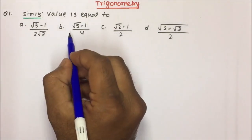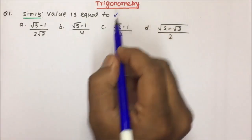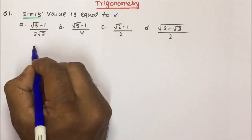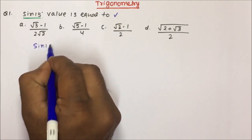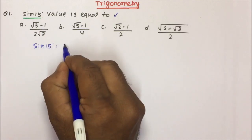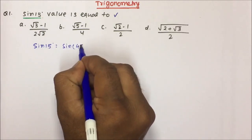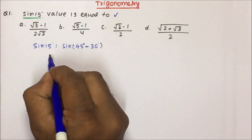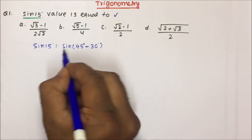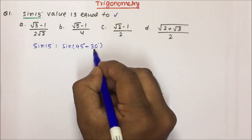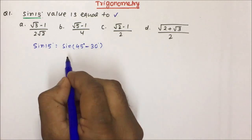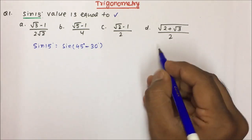Question number one: the value of sin 15° is equal to? So, sin 15° — how to calculate it? I can write sin 15° as sin(45° − 30°). If you try to write it in terms of 90°, then sin(90° − 75°), but it will be difficult to calculate 75°. That is the reason we write it as sin(45° − 30°).